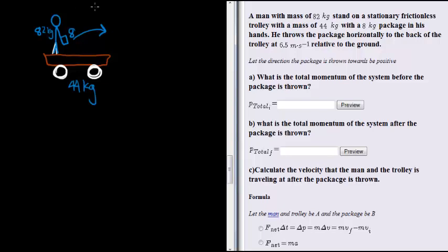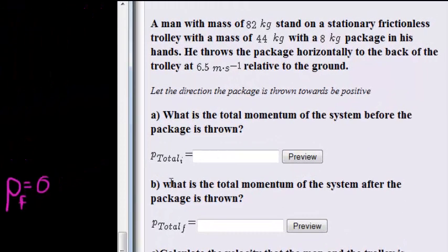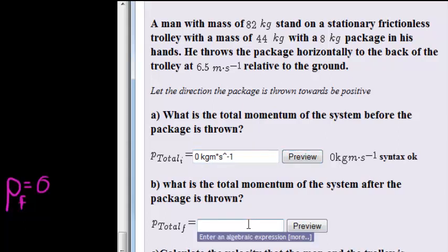Now, as you can see, all of this is just one thing — one unit. What you should recognize is that our initial momentum, before the package is thrown, is just zero — nothing is moving. And that means, if there are no external forces acting, the principle of conservation of momentum tells us that our final momentum must also be equal to zero. The total momentum of the system before the package is thrown is zero kilogram meters per second.